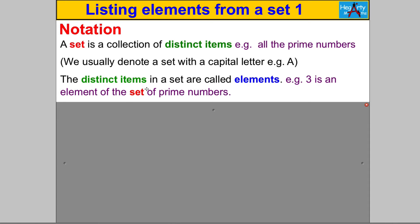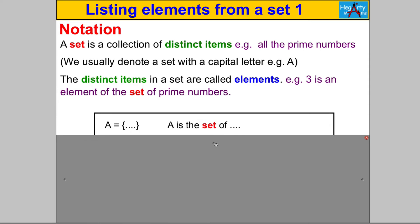We don't call them items or distinct items, we call them elements. For example, 3 is an element of the set of prime numbers. 3 is a prime number. Here is some notation we need to be familiar with. If you see capital A is equal to these brackets here, it stands for A is the set of, and the details of that set will be inside the brackets.